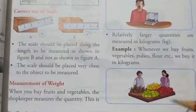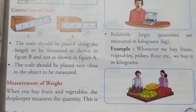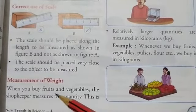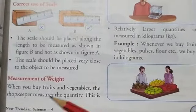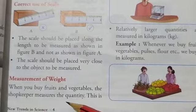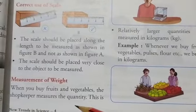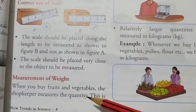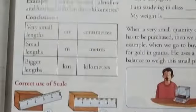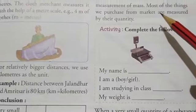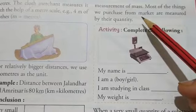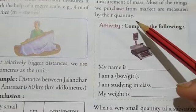Next is measurement of weight. So as we have already discussed that whenever we go to buy fruits and vegetables, the shopkeeper measures the quantity of fruits and vegetables. And this is known as measurement of mass or measurement of weight. So most of the things that we purchase from market are measured by their quantity.